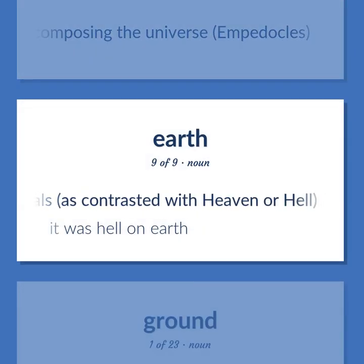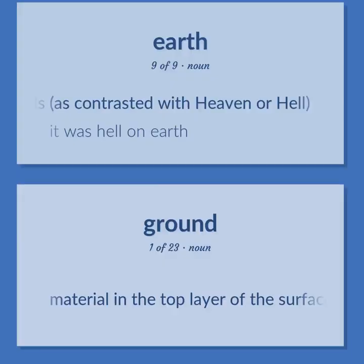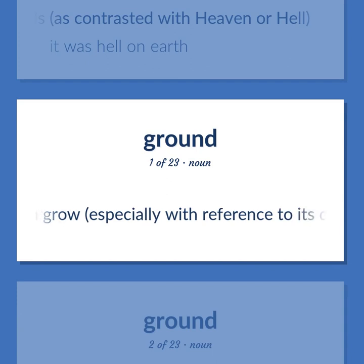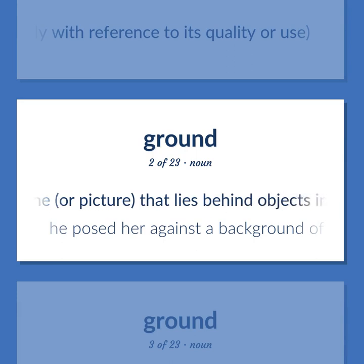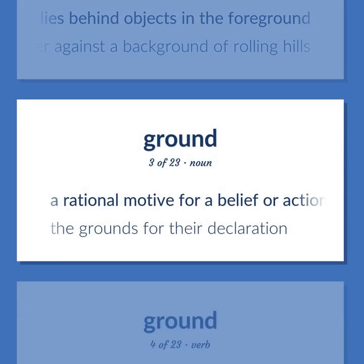As contrasted with heaven or hell — 'It was hell on earth.' Material in the top layer of the surface of the earth in which plants can grow, especially with reference to its quality or use. The part of a scene or picture that lies behind objects in the foreground — 'He posed her against a background of rolling hills.' A rational motive for a belief or action — 'The grounds for their declaration.'